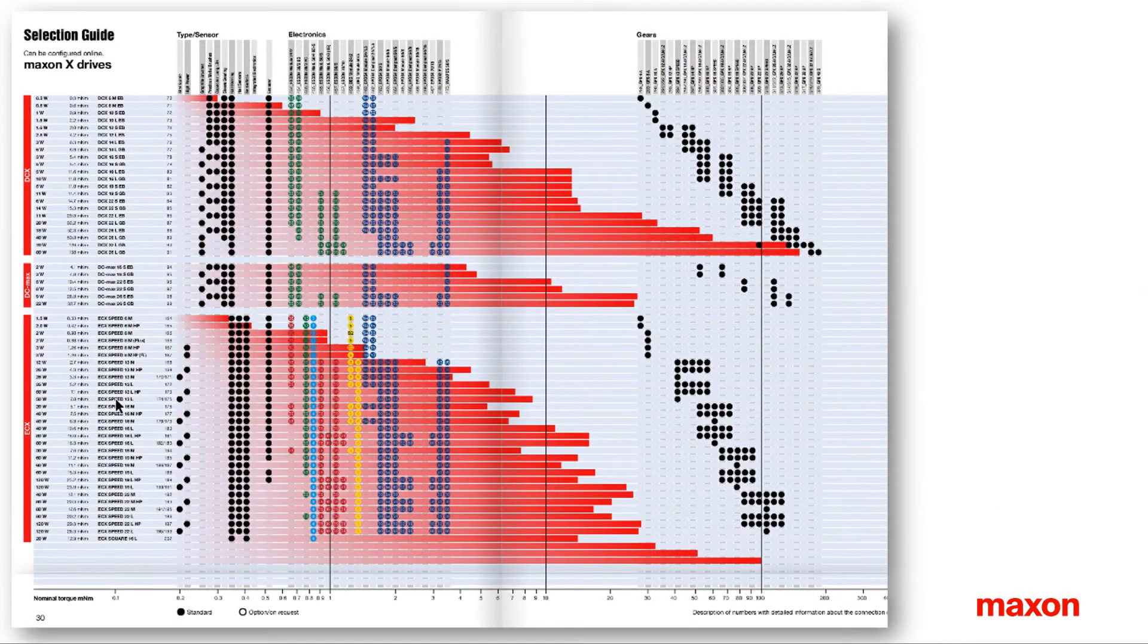A good overview of the nominal torque of Maxon motors offers the selection guide in the catalogue. The red bars indicating the torque capabilities with respect to the scale at the bottom. You can also find here a lot of additional information such as possible combinations with encoders, gears and controllers.